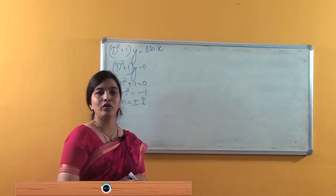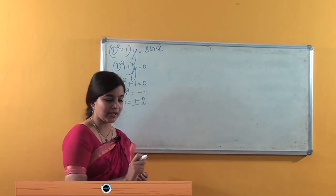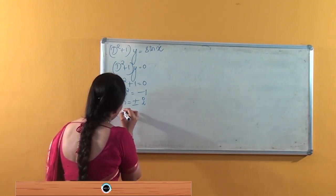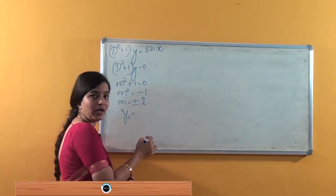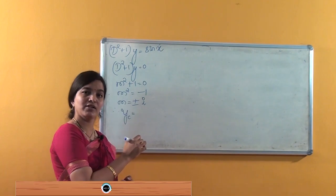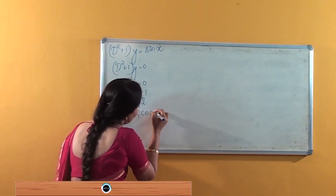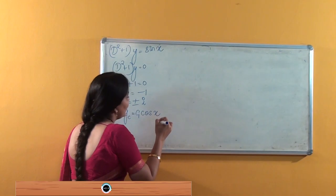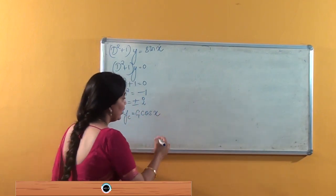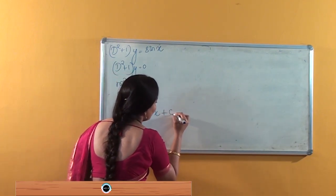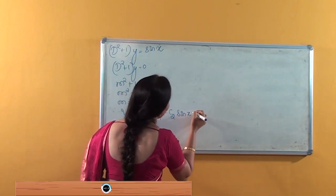When we have imaginary roots, as explained in the previous class, the complementary solution is written as: yc = c₁ cos x + c₂ sin x, where here the coefficient of x is 1.